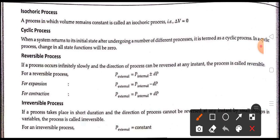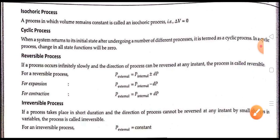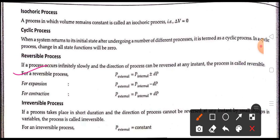Next one is the reversible process. If a process occurs infinitely slowly and the direction of the process can be reversed at any instant, the process is called a reversible process. For a reversible process, p external is equal to p internal plus dp.